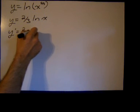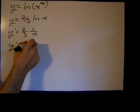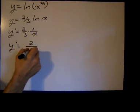The derivative of ln of x is one over x. So putting that together, we'll have y prime equals two over 3x.